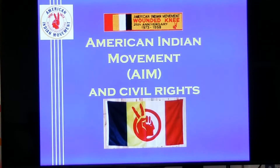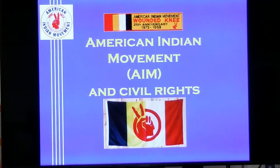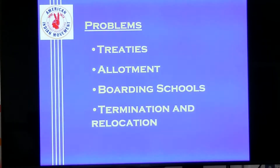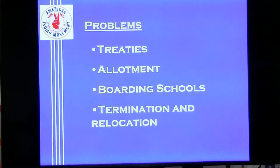The third civil rights group we're going to focus on is the American Indian Movement, typically known as AIM, and their push for civil rights. Major problems in this community that led to the formation of AIM include broken treaties, the allotment policy conducted through the Dawes Act that stripped land away from American Indians, boarding schools, and termination and relocation policies by the United States government.